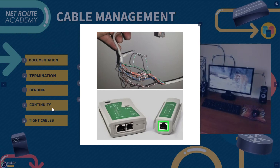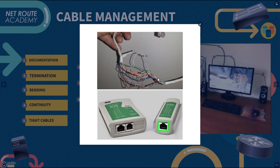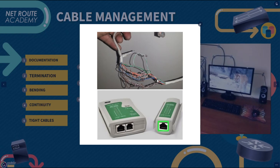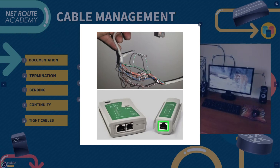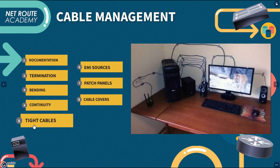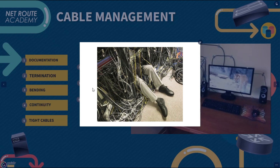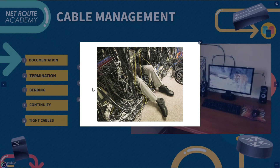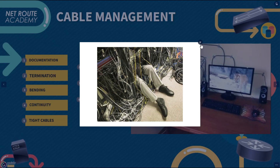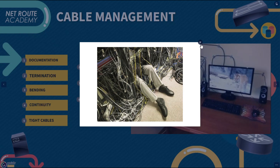Next is continuity — to ensure that every piece of installed cable transmits data reliably, use a cable tester. This way you won't have to search for errors after deployment. Use the cable tester before you deploy it. Next is tight cables — make sure cables are not too tightly secured, as over-tightening can squeeze the outer covering, causing data errors and making it challenging to identify problems later.